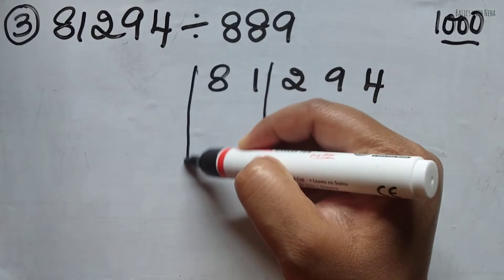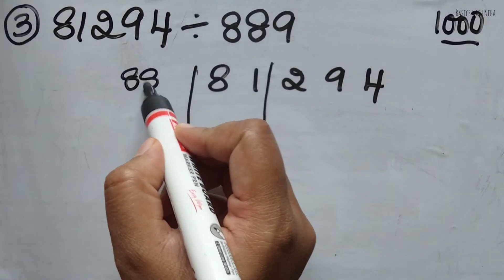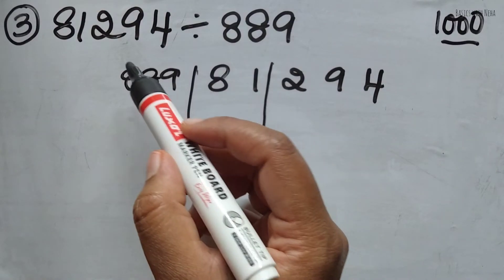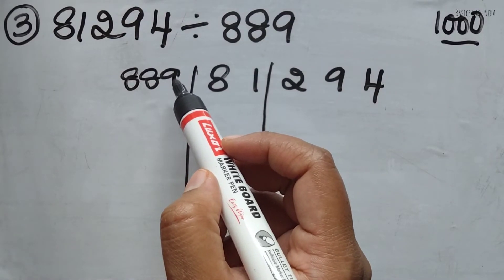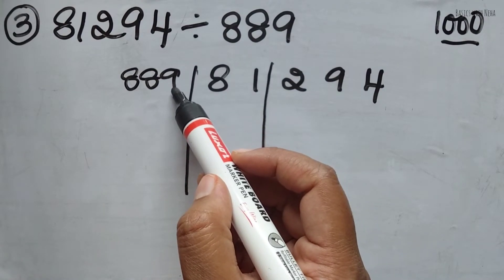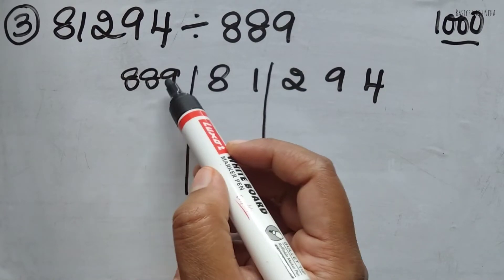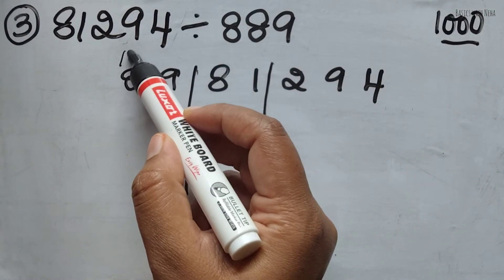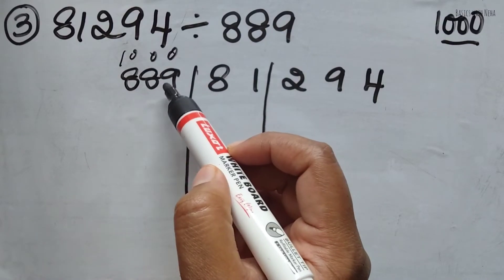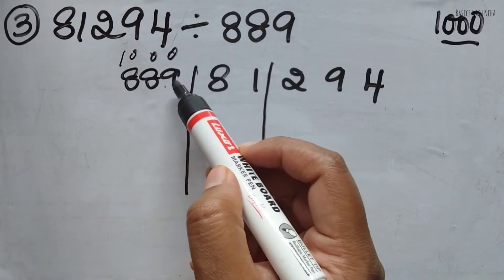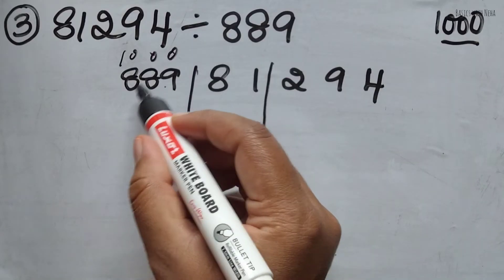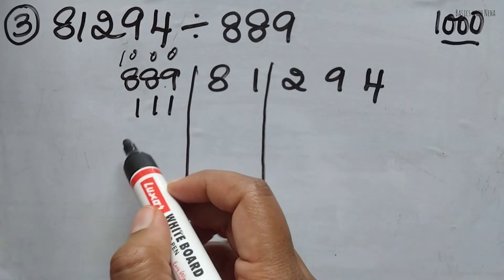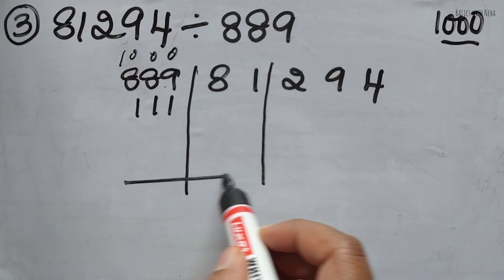And now I have to write the divisor, which is 889. Why we call it as Nikhilam Sutra is because we are going to use all from 9 and last from 10. So here, as I told you, what should be added to 889 to get 1000. In the same way, if we use Nikhilam method, that is 1000 minus 889, it is all from 9 and last from 10 method. So here, if I subtract this, I will get 1, 1, 1. So I have 3 zeros, I have 3 numbers, so I can end it there.